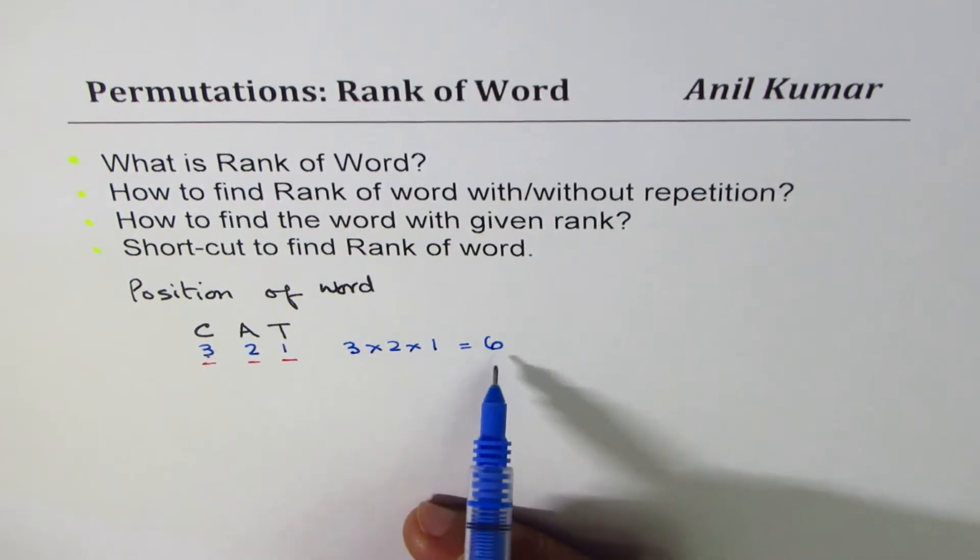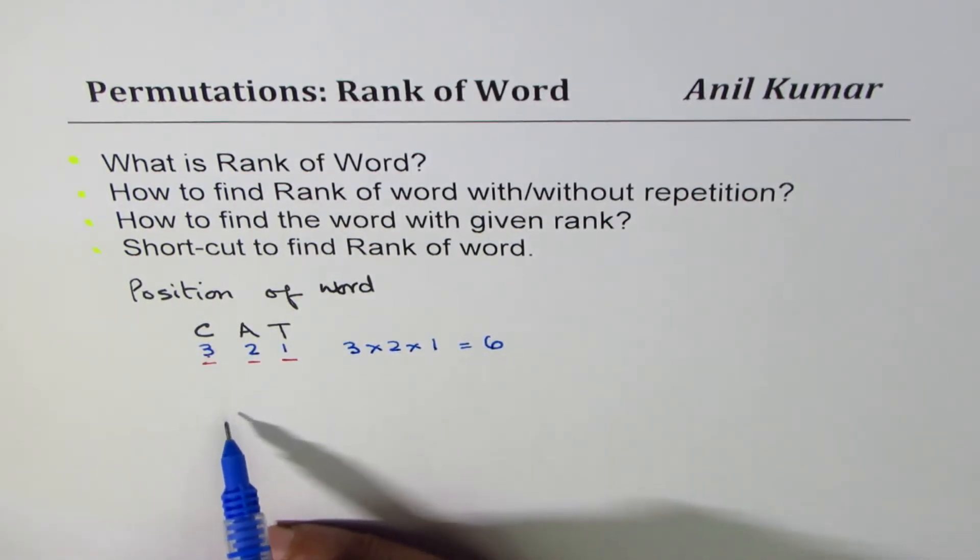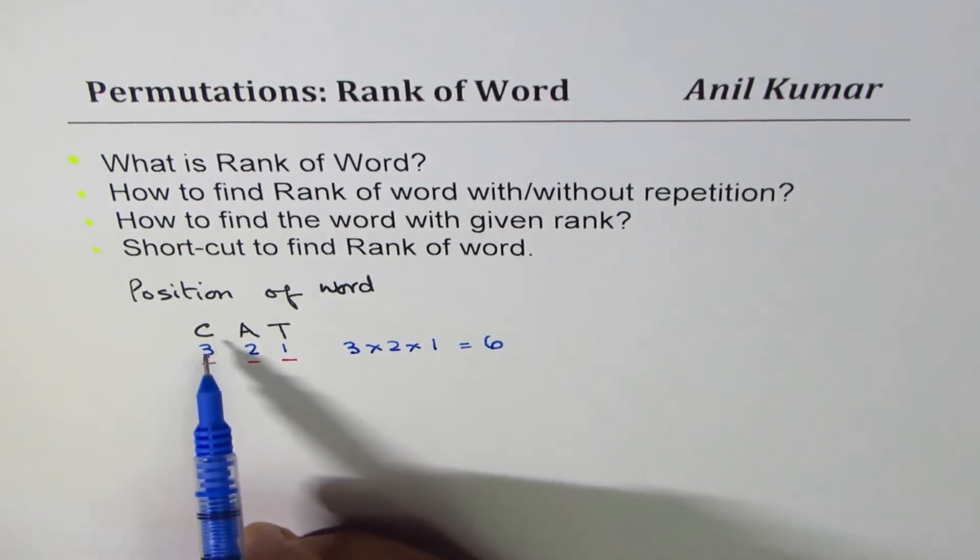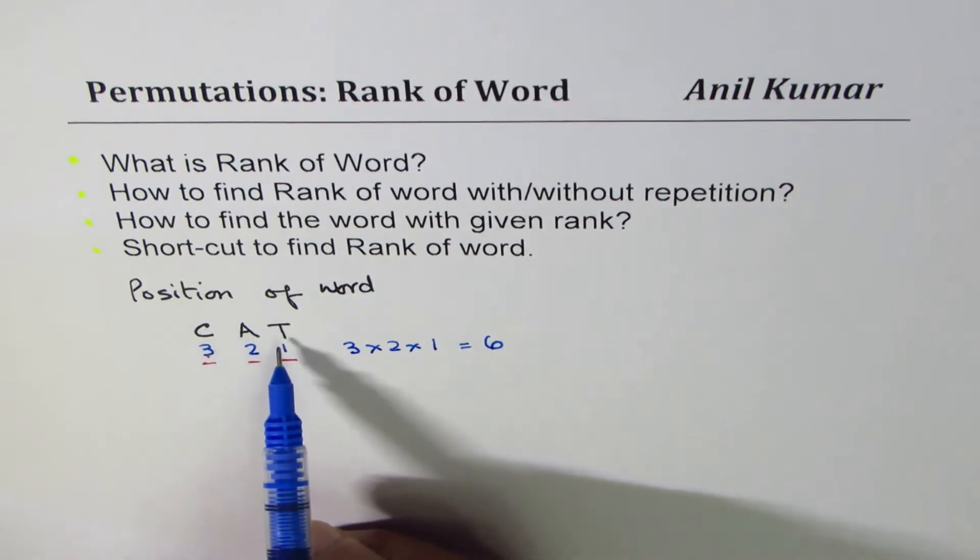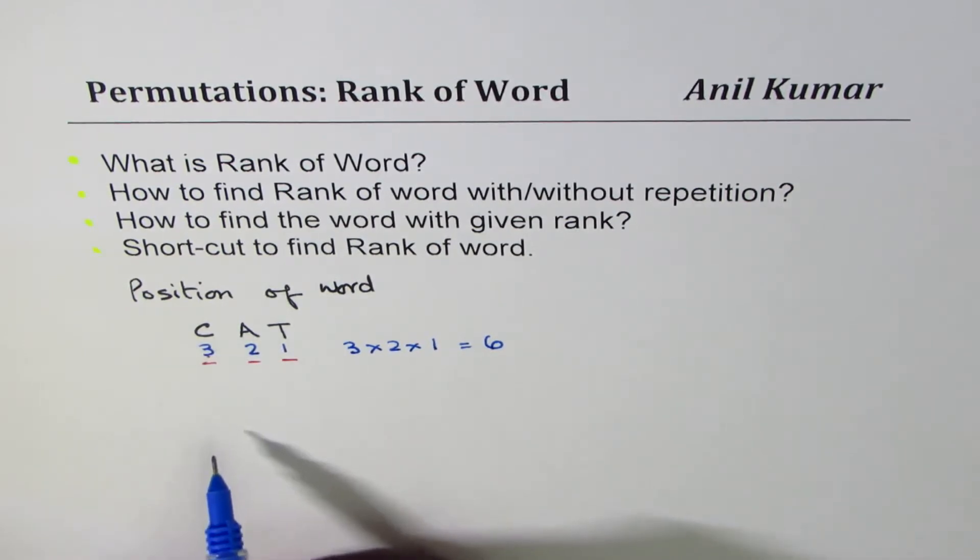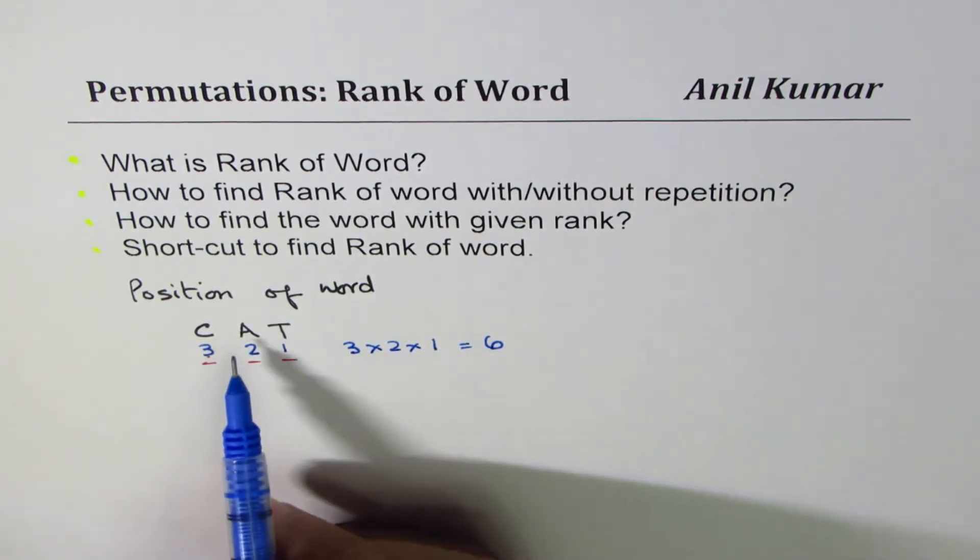Now the rank is, all of these six words, if we arrange them in alphabetical order as it is done normally in dictionary, where will CAT appear? In which position? And that position number is called rank of the word.